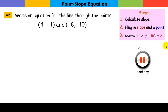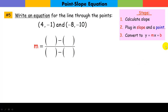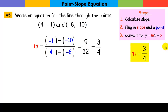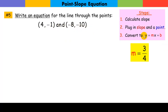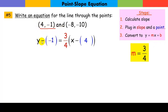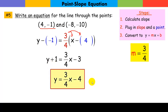Let's try another one. Calculating the slope, we get 9 over 12, which simplifies to 3 over 4 — so it rises 3 and runs 4. I can pick either one of these points, and I pick this one here. Notice y minus a negative 1 becomes y plus 1. This distributes, and the 4s cancel. Subtract 1 from both sides, and our equation in slope-intercept form is y equals 3 over 4x minus 4.